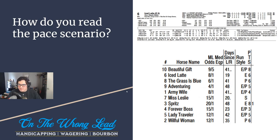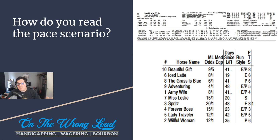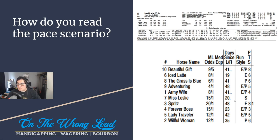So how do you read a pace scenario? If you look at the speed points and run styles and you see a bunch of E type horses with sixes, sevens, and eights, generally that means there's going to be a real fast pace. Maybe that's a time you look to find horses that are going to be coming from a little bit further behind, and start fading some of the horses that are going to be real close up early.